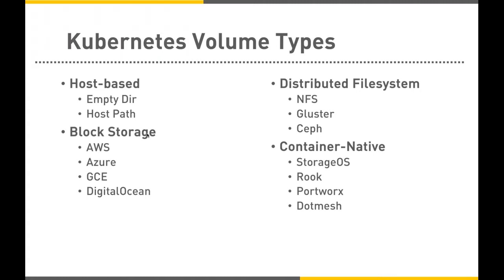In scenarios where you need the volume to survive the pod lifecycle, you create what's called a hostPath. The hostPath volume type survives the pod — once you create a hostPath and persist data inside it, even if the pod is terminated, the data is still retained. It's not wiped off by the Kubernetes controller. Later, when you launch a pod pointing to the same hostPath, you can retain and retrieve that data.